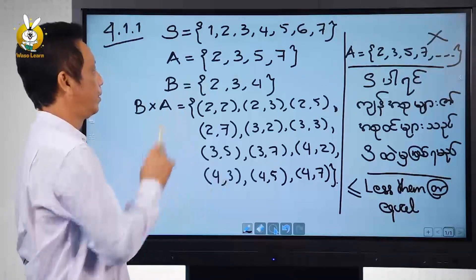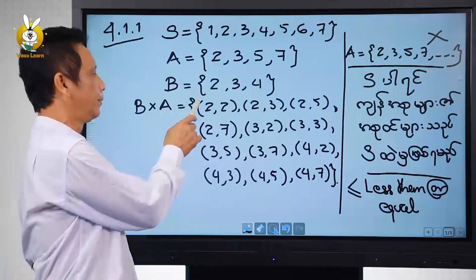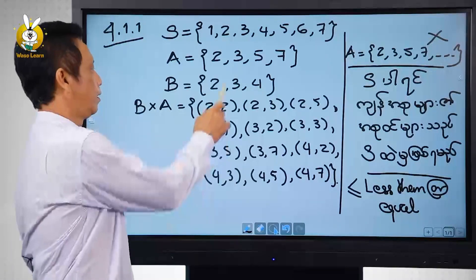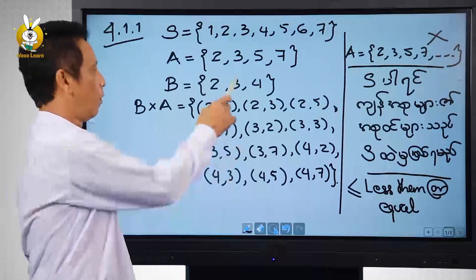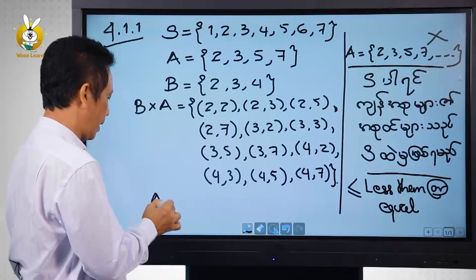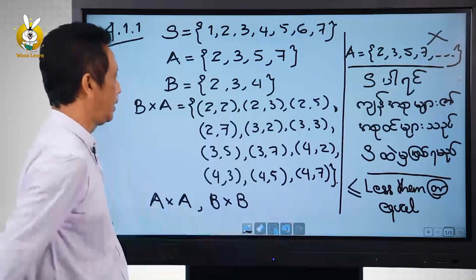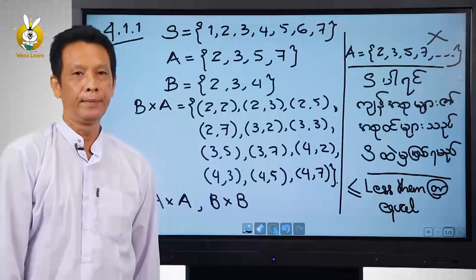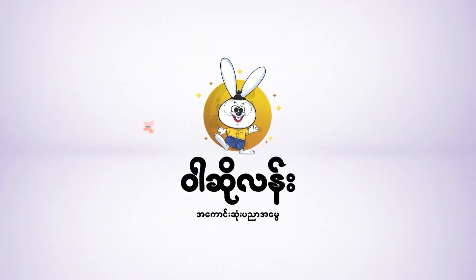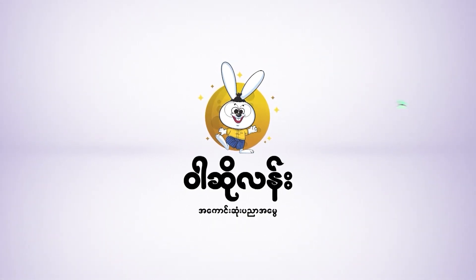Now the next row: (4,2), (3,3), (3,4), (4,2), (4,3), (4,4). Now the linear pair is (4,3).